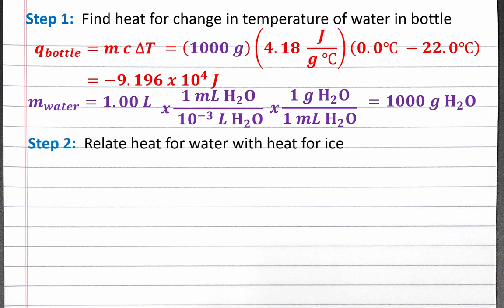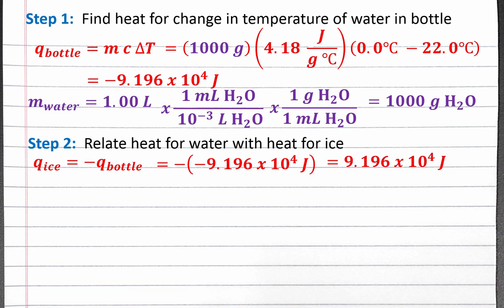Our next step is to relate this amount of heat to the heat for the ice. The energy given off by the water is absorbed by the ice, so Q_ice equals negative Q_bottle. The ice needs to absorb 9.196 times 10 to the fourth joules of heat, so heat is positive for the ice.